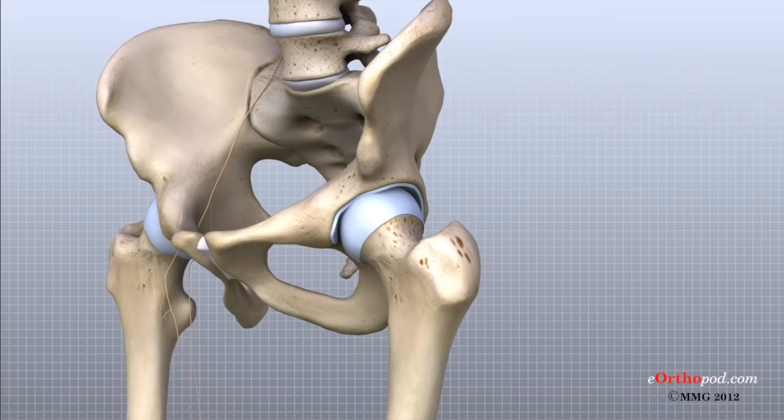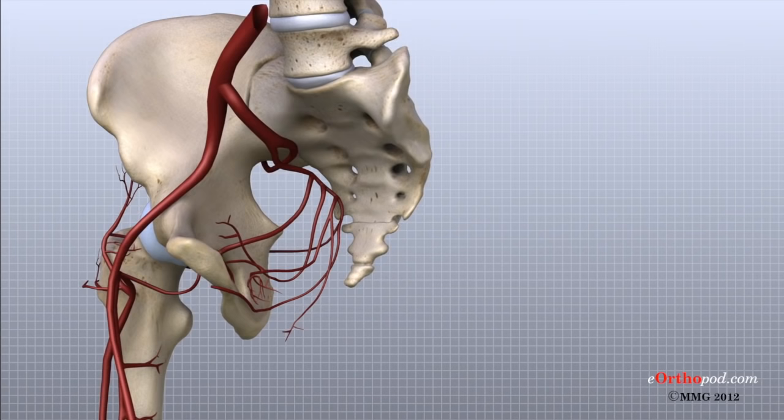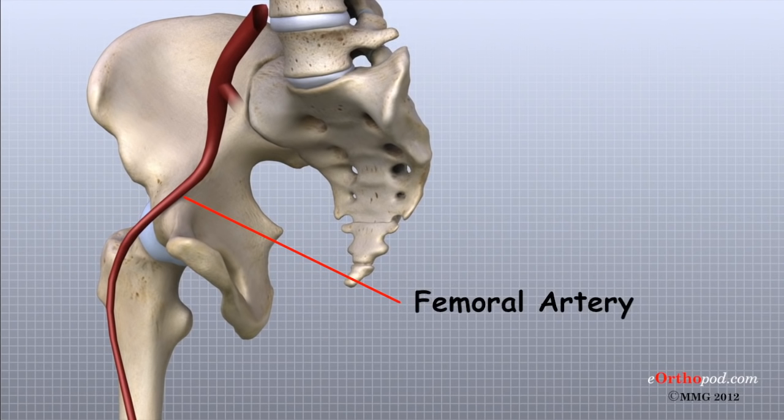Traveling along with the nerves are the large vessels that supply the lower limb with blood. The large femoral artery begins deep within the pelvis. It passes by the front of the hip area and goes down toward the inner edge of the knee. If you place your hand on the front of your upper thigh, you may be able to feel the pulsing of this large artery.